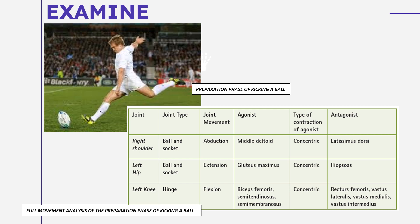For joint movement: the right shoulder performs abduction. The left hip performs extension — it is extended back in preparation to kick. And for the left knee, the joint movement is flexion.